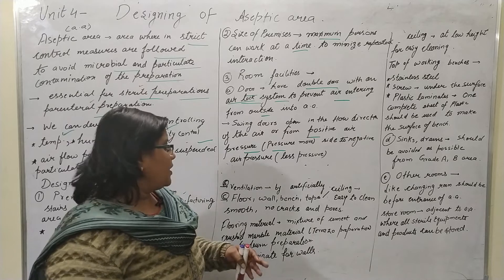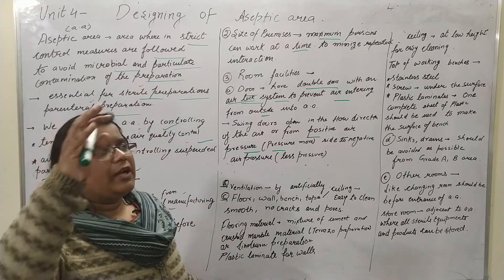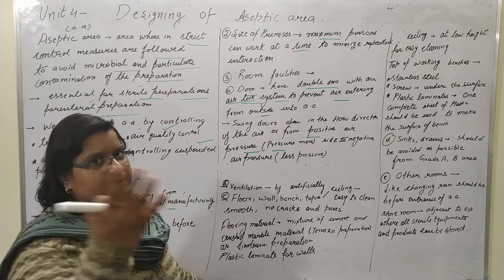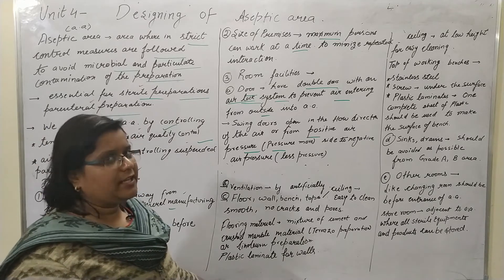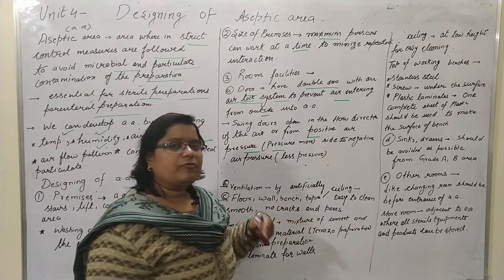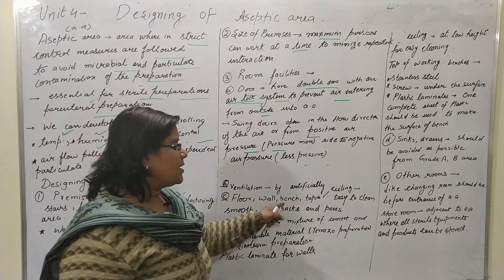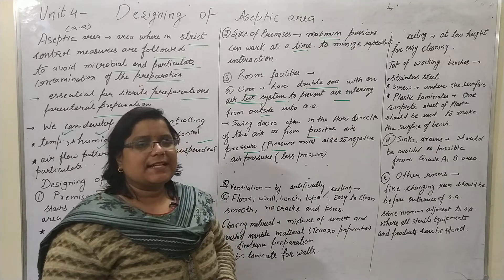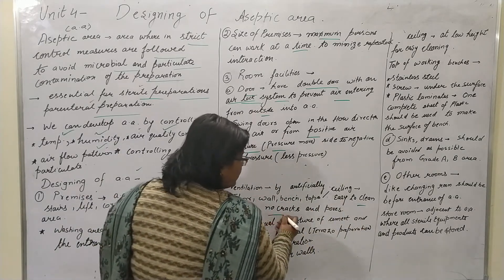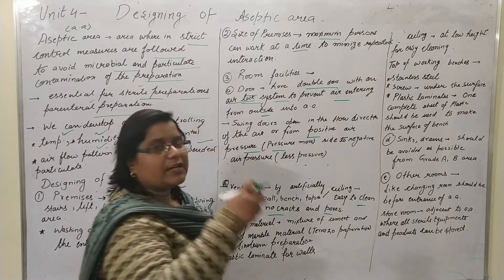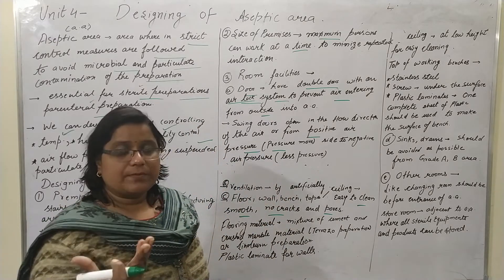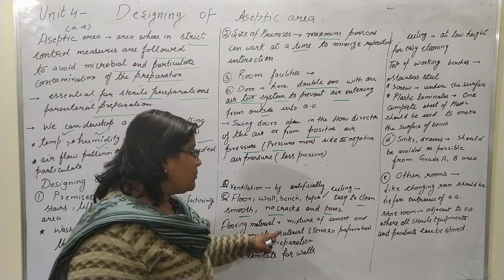Ventilation in the aseptic area is provided artificially — we circulate the air without opening doors or windows. Regarding floors, walls, bench tops, and ceilings: they must be easy to clean, smooth, with no cracks and no pores, because dust particles can accumulate in cracks and promote microbial growth.